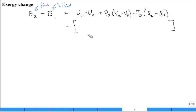u1 minus u0 plus p0 v1 minus v0 minus t0 s1 minus s0. Well, we see a lot of cancellation.